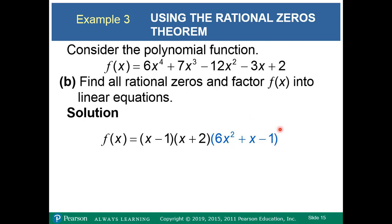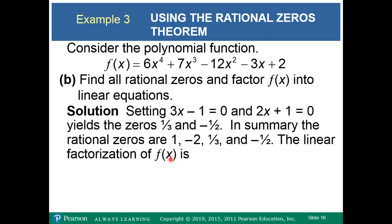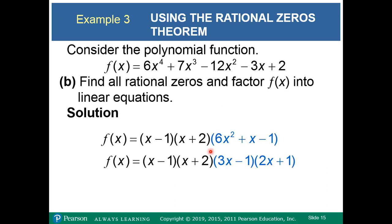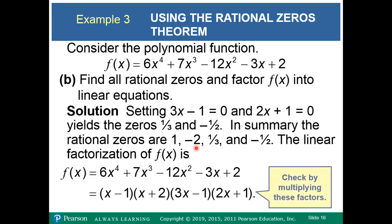Now we've got two factors from the Rational Zeros Theorem and Factor Theorem, and we can factor the remaining quadratic directly using our toolbox. So now we've got four linear factors, four zeros. Setting each factor equal to zero using the zero product principle, we find the zeros are one-third, negative one-half, 1, and negative 2. This is completely factored, and we can check by multiplying all the factors together to see if we get the same polynomial back — always check at least once.